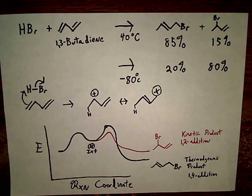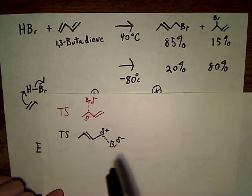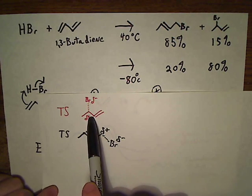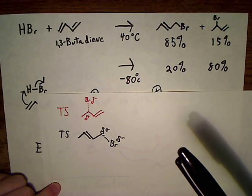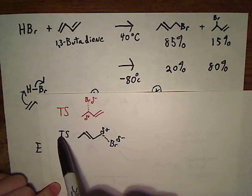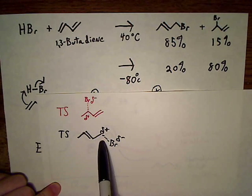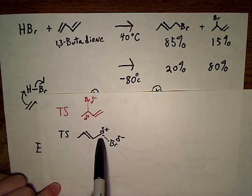And the reason for that, you can tell just by looking at the transition states. As you can see, the transition state for the 1,2 product has a partial positive charge on a secondary carbon, which is going to be more stable than the transition state for the 1,4 product where you have a partial positive charge on a primary carbon.